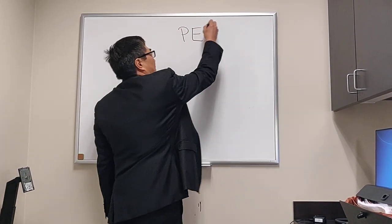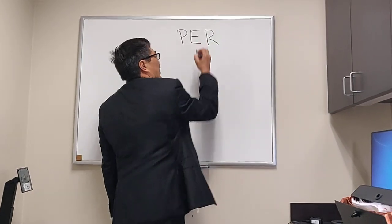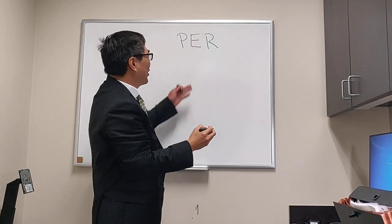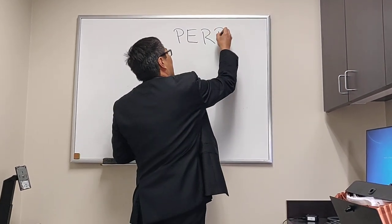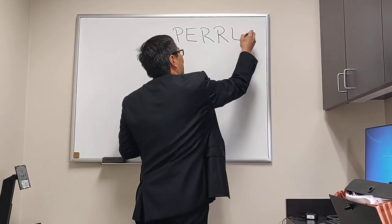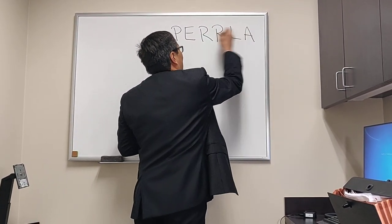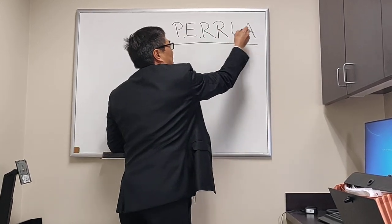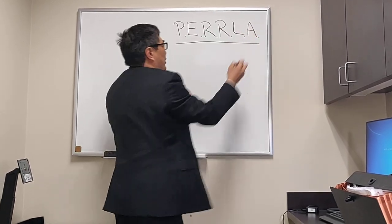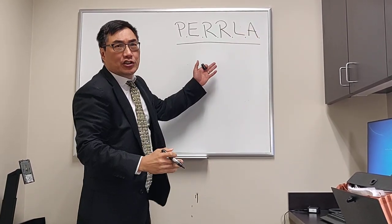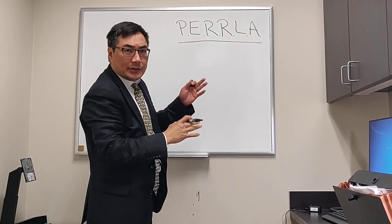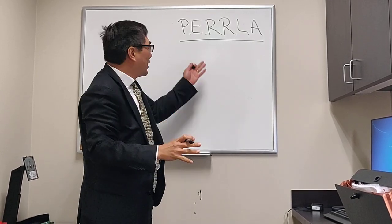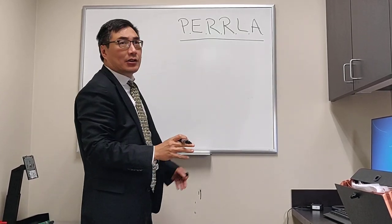One of the things that I don't like is PERLA — 'pupils equal round and reactive to light and accommodation.' It's an abbreviation that is going to appear in many charts in hospitals in the city, across the country, and perhaps even across the globe.